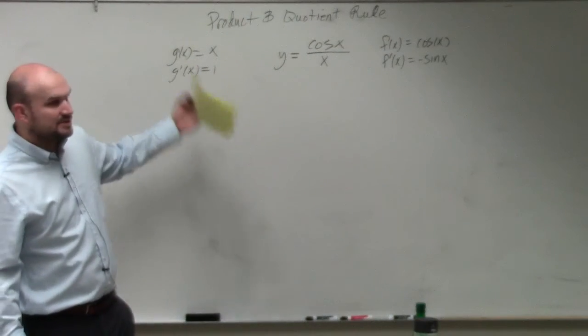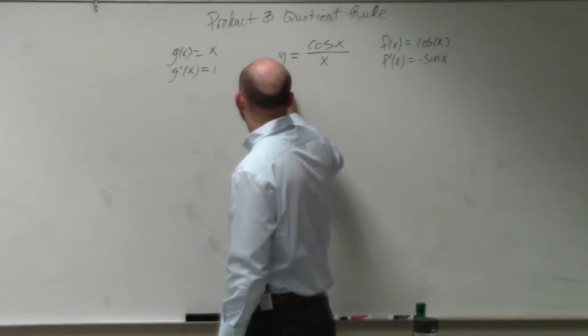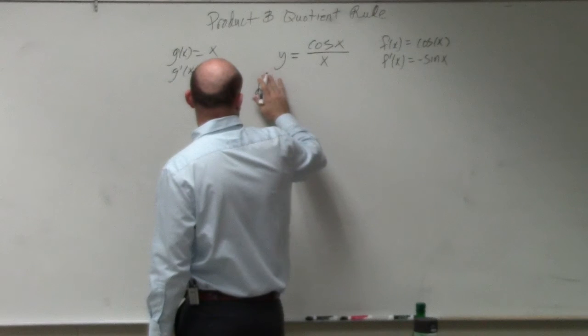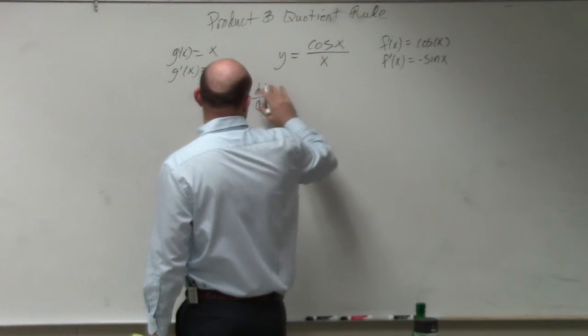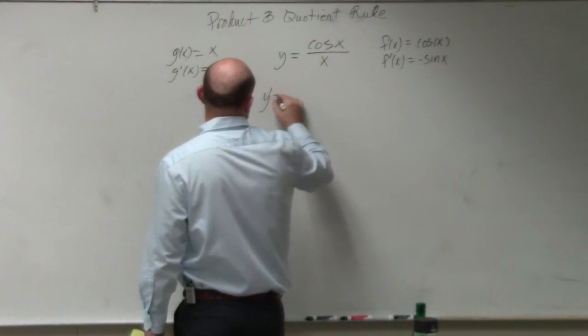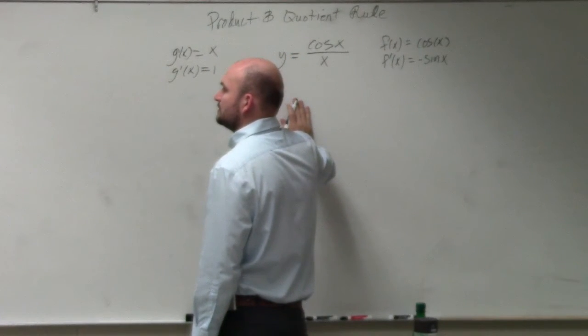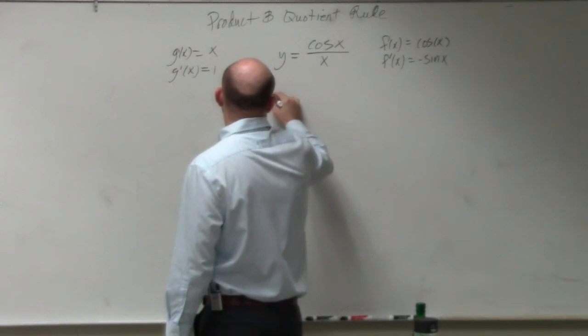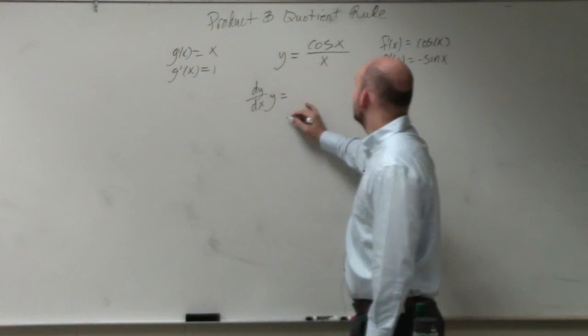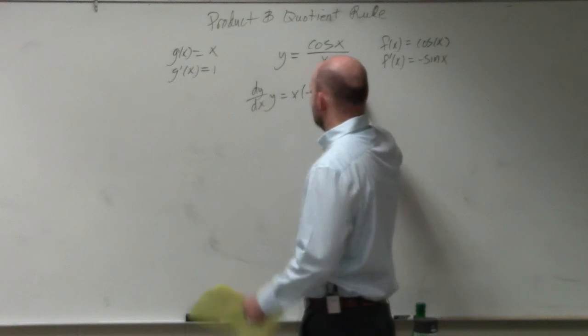OK, now we'll just go ahead and plug them into our quotient rule. So we have g of x, which is just going to be x, times f prime of x, which is negative sine of x.